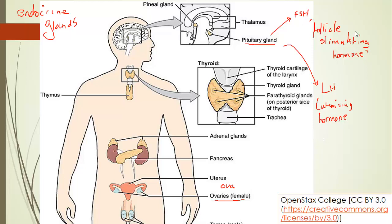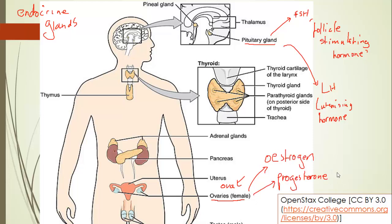Follicle stimulating hormone does exactly what it says — it stimulates a follicle to develop. Those follicles are down here in the ovaries and they contain the ova. The ovaries themselves put out two hormones: oestrogen and progesterone. In particular, progesterone has a feedback effect onto the pituitary gland, so it kind of all goes round in a circuit.